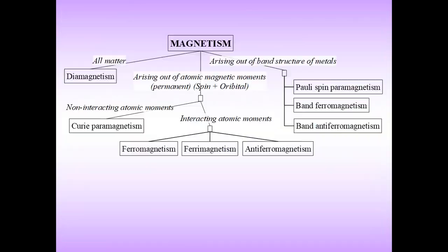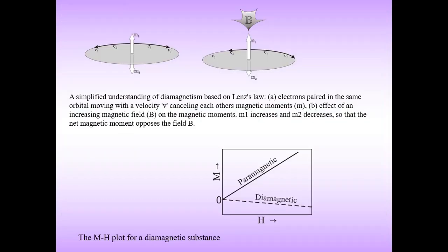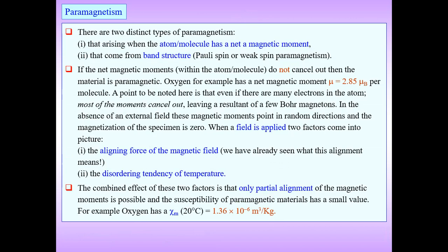First, diamagnetism repels the magnetic field. Then paramagnetism — paramagnetism arises when an atom or molecule has a net magnetic moment, which can come from the band structure, spin, or weak paramagnetism. For example, oxygen has a net magnetic moment µ equal to 2.85 µB per molecule.